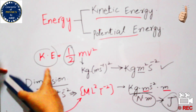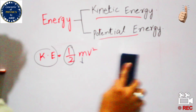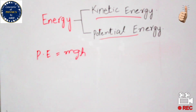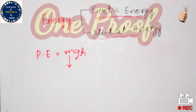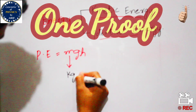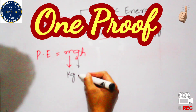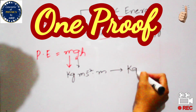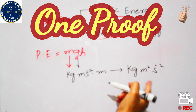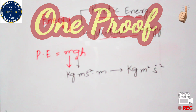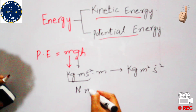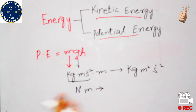The unit of potential energy must equal the unit of kinetic energy. Potential energy equals mgh, where M is in kilograms, g is acceleration in meters per second squared, and h is height in meters. This gives kilogram meter squared per second squared, the same as kinetic energy. Combined, this equals Newton times meter, which is Joule. So the units of potential and kinetic energy are the same — proved.